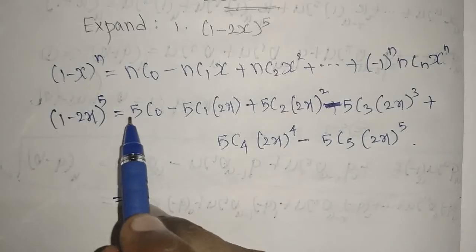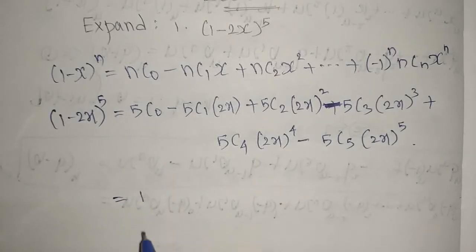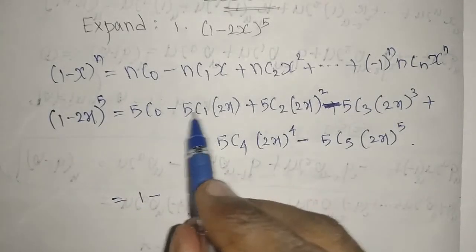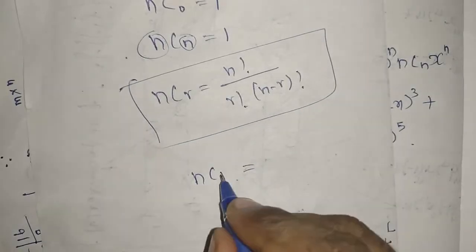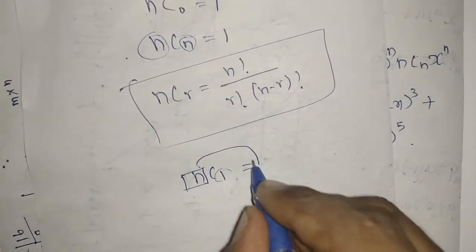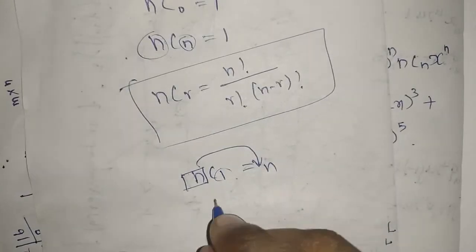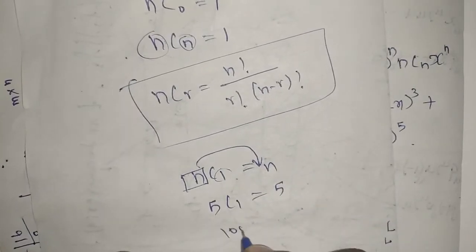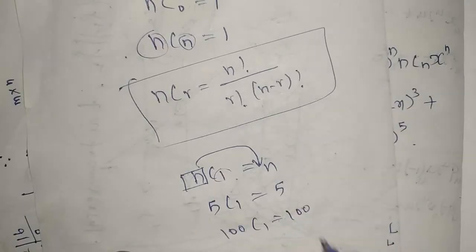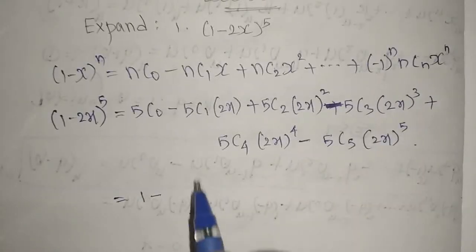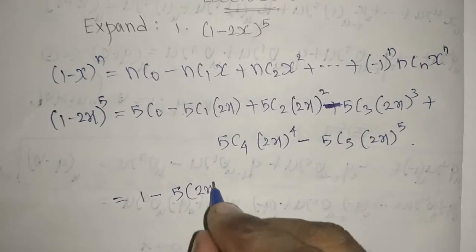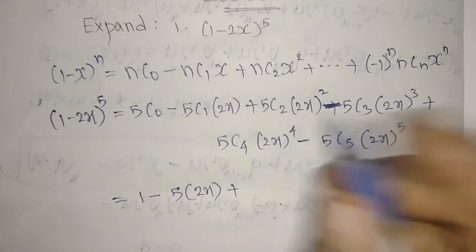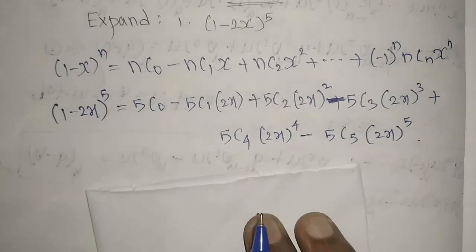So 5C0 is 1. For nC1, the value is always n — so 5C1 equals 5, and 100C1 would equal 100. Therefore 5C1 equals 5, giving us minus 5·(2x).